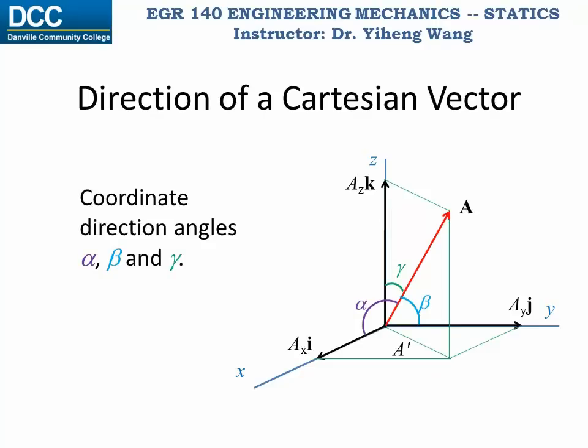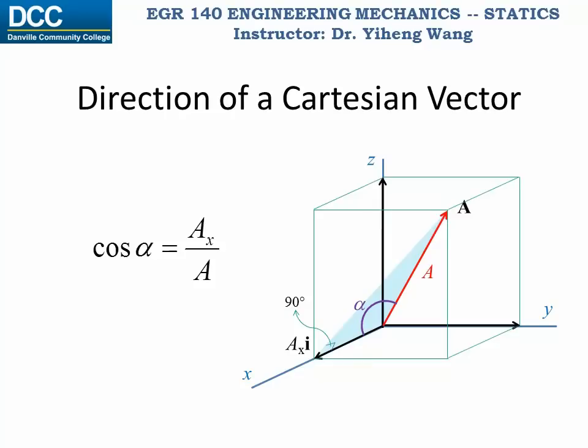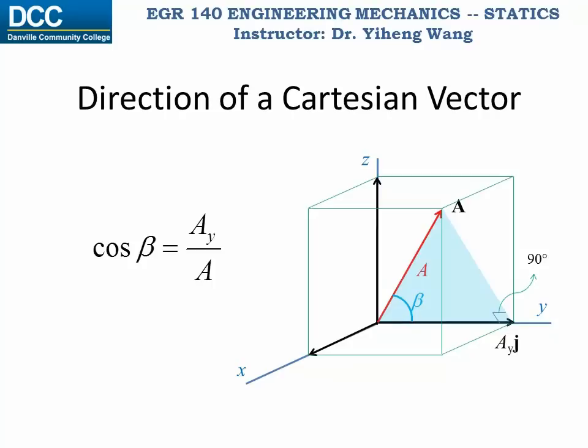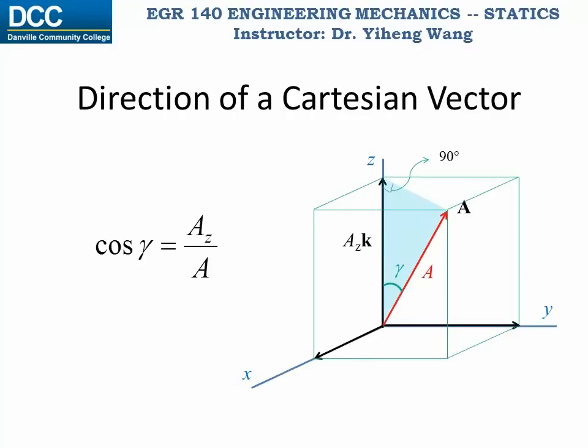To describe the direction of the vector we can use the coordinate direction angles alpha, beta, and gamma. Alpha is defined as the angle between the vector and the x axis, and similarly beta and gamma are the angles between the vector and the y and z axis respectively. If we highlight the plane made by vector a and the x axis, shown as the blue shaded area, then according to trigonometry we know that cosine alpha equals a_x divided by a. Similarly, cosine beta equals a_y divided by a, and cosine gamma equals a_z divided by a.